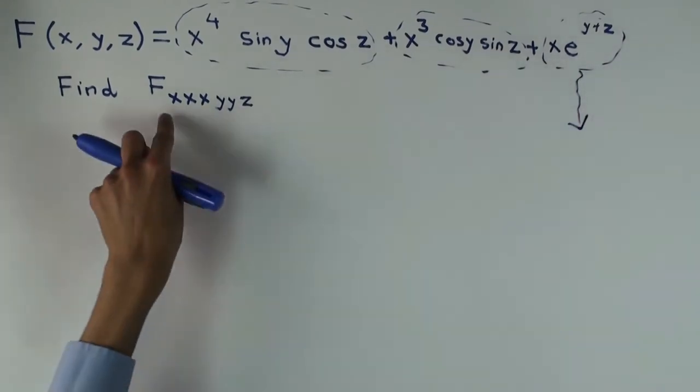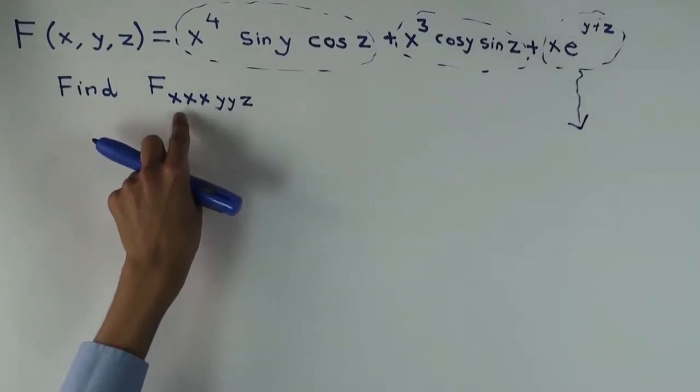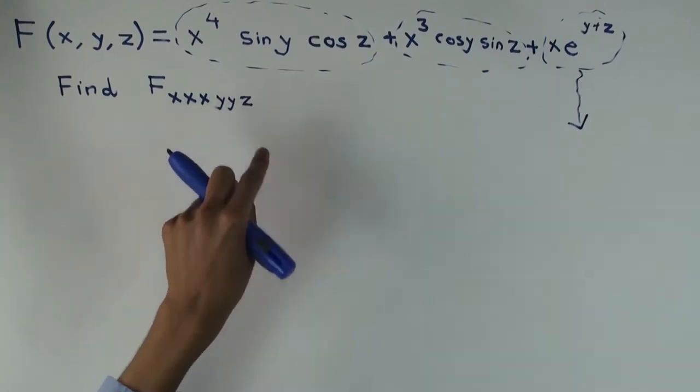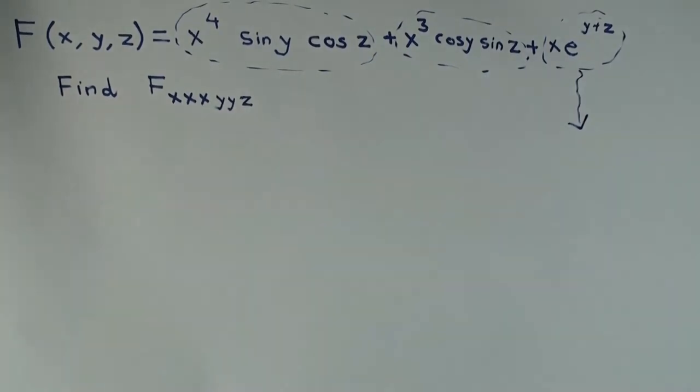What is going to be, what will happen when I differentiate it thrice with respect to x, thrice with respect to y, and once with respect to z? Zero. Zero, why?